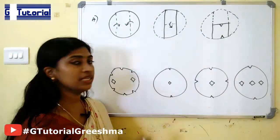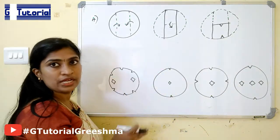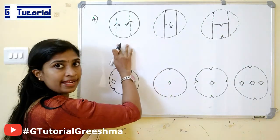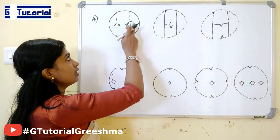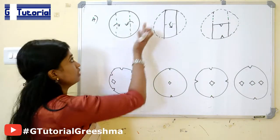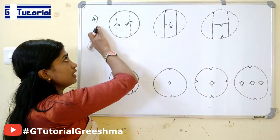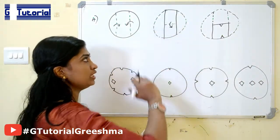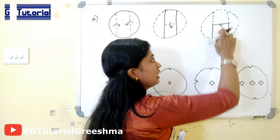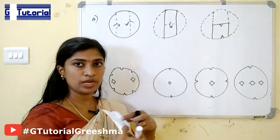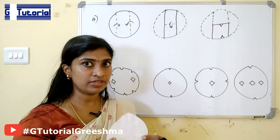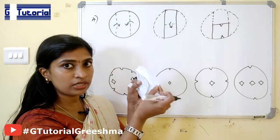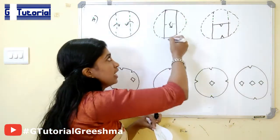Now we can move on to the next question. Here the figure is in circular shape. This shows the reference line or the direction of folding, and the arrow denotes the direction in which the paper is folded. This side is folded in this manner, and this side is folded in this manner. Then again this is folded in the downward direction, and then two cuts are made. So this is a circular sheet of paper — the first folding is done in this manner so that you get only a rectangular shape.